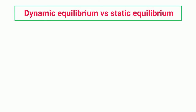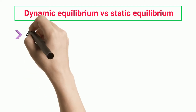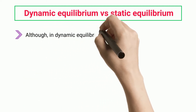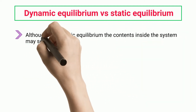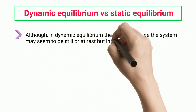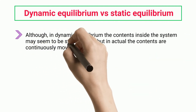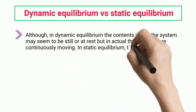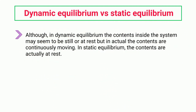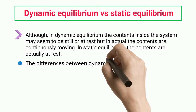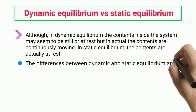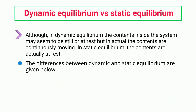Dynamic Equilibrium vs. Static Equilibrium. Although in dynamic equilibrium the contents inside the system may seem to be still or at rest, in actual the contents are continuously moving. In static equilibrium, the contents are actually at rest. The differences between dynamic and static equilibrium are given below.